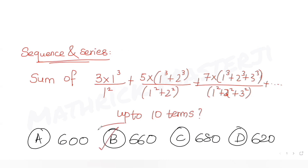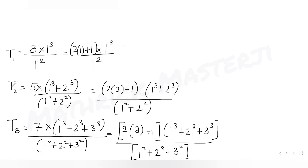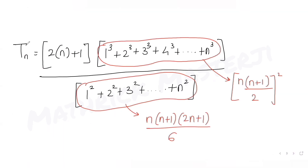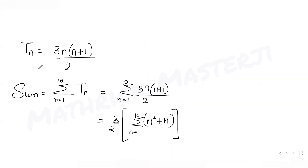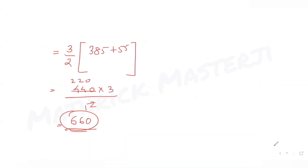If you see the answer choices, that matches with option B. So option B is the correct answer. What we did was: we found the first, second, and third terms in terms of their position number, then found the nth term using the formulas for sum of n cubes and n squares from 1 to n. We got the nth term as 3n(n+1)/2, then found the sum from n = 1 to 10, which gives 660, matching option B.